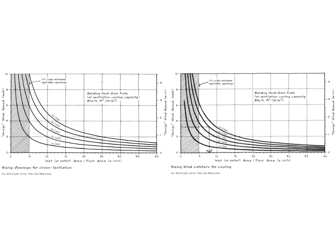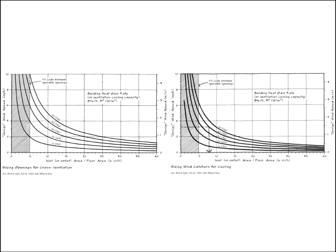Here are two sizing charts — one for cross ventilation openings on the left and one for wind catcher openings on the right. They work the same way, with wind catchers being slightly more efficient, meaning you need a little less aperture area for a wind catcher to do the same cooling job as cross ventilation. Let's take a closer look at the sizing openings for cross ventilation graph, which appears in the ventilation apertures strategy.